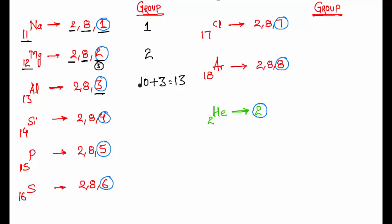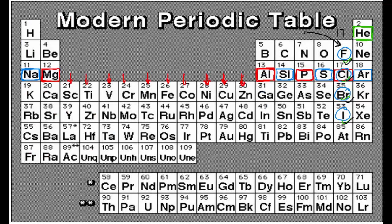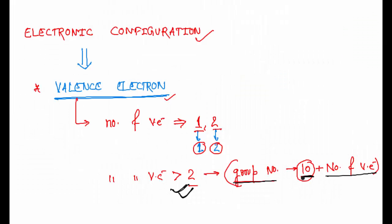Now the question is: why are we adding 10? It's very simple — just look at the periodic table. You can see group 1 here (sodium, atomic number 11) and group 2 here (magnesium, atomic number 12). In between magnesium and aluminium, you can count 1, 2, 3, 4, 5, 6, 7, 8, 9, 10 — ten groups are coming in between. That's why we are adding 10.